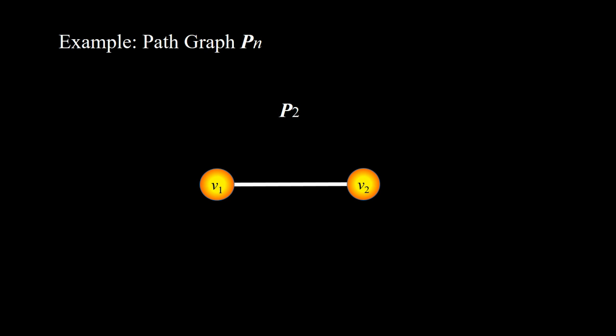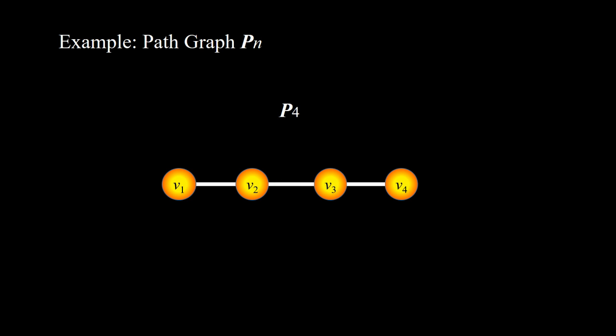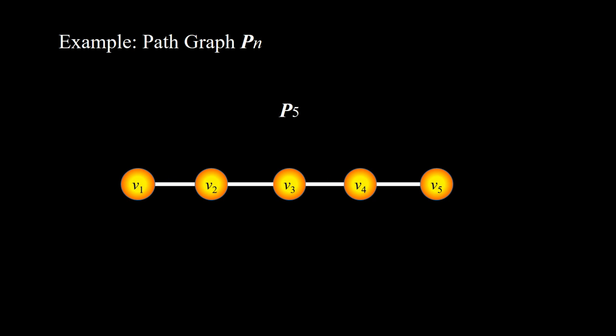For example, P2 is a path of 2 vertices; P3 is a path of 3 vertices; P4 has 4 vertices in a path; and P5 consists of 5 vertices.